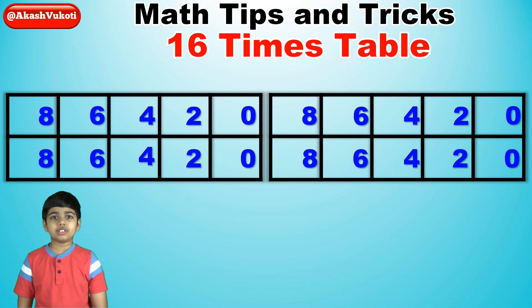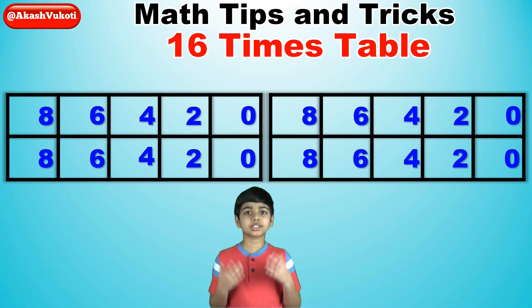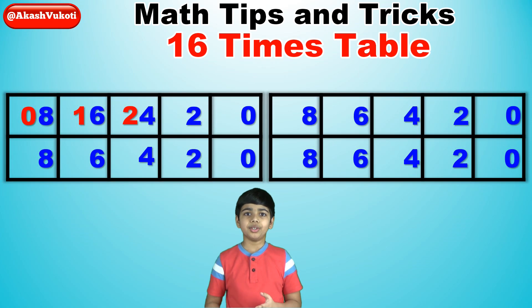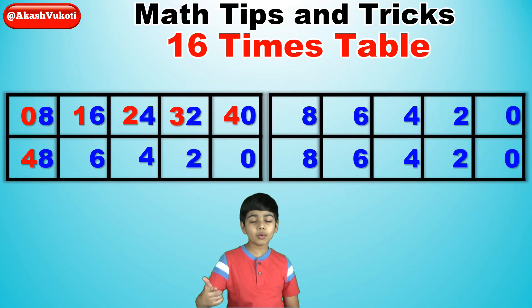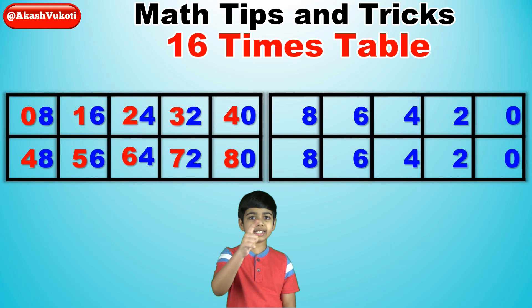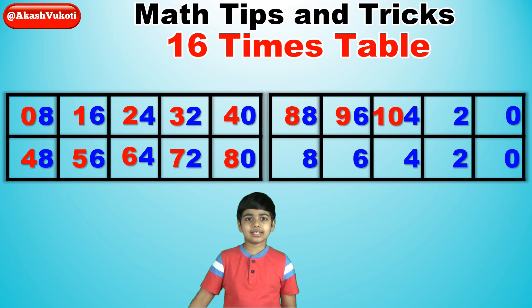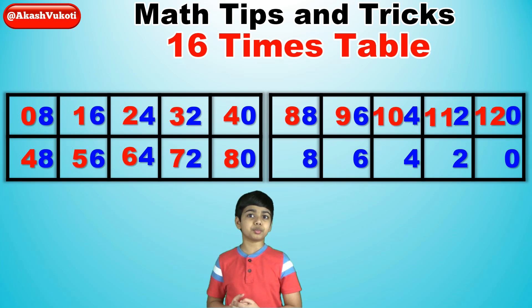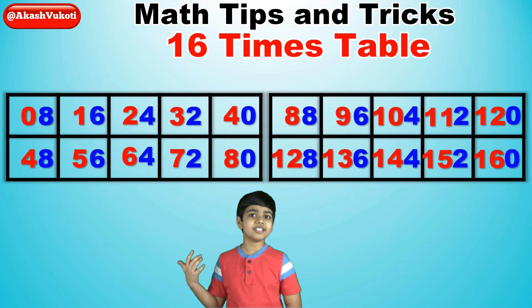Then for the 10s digits, we'll write the numbers from 0 to 16, being sure to repeat every multiple of 4. So: 0, 1, 2, 3, 4 — 4 is a multiple of 4, so repeat it — 4, 5, 6, 7, 8 — 8 is a multiple of 4, so repeat it — 8, 9, 10, 11, 12 — 12 is a multiple of 4, it is 4 times 3, so repeat it — 12, 13, 14, 15, and finally 16. You don't have to repeat 16 again because it's the last one in the grid.